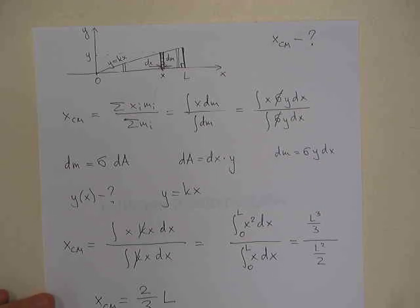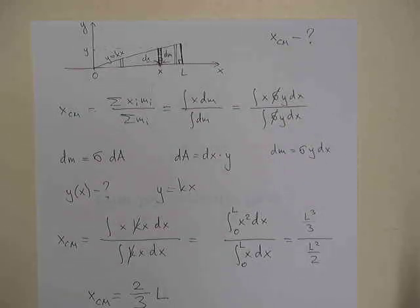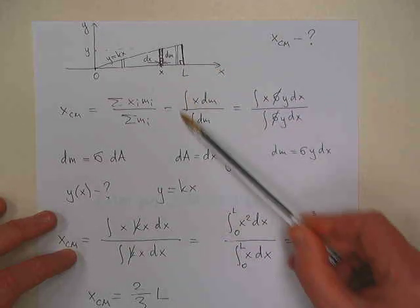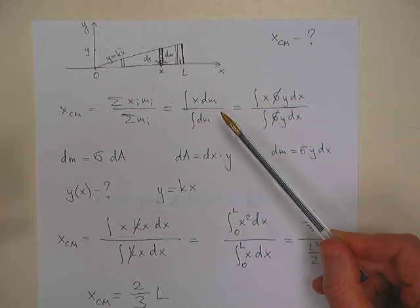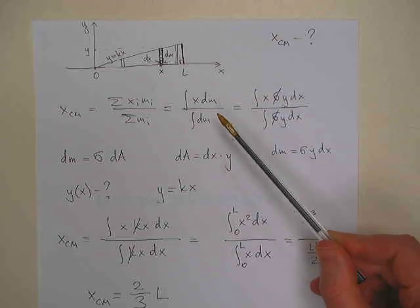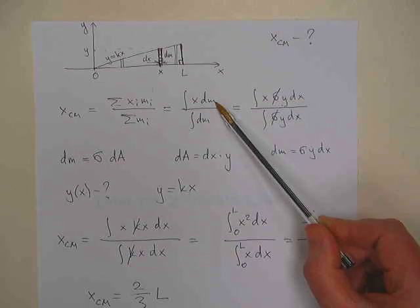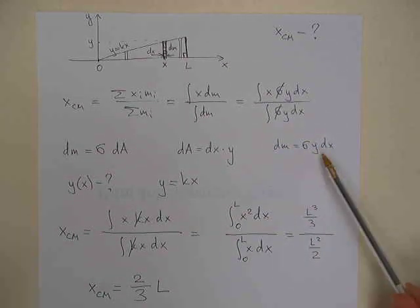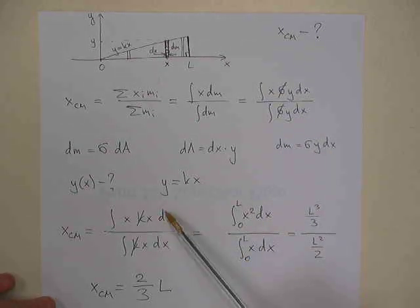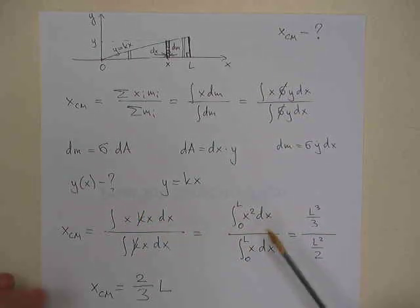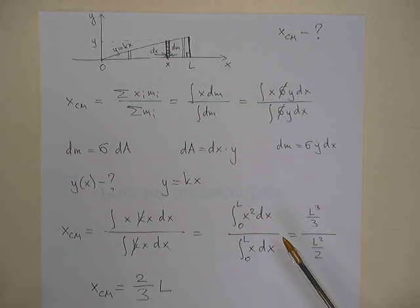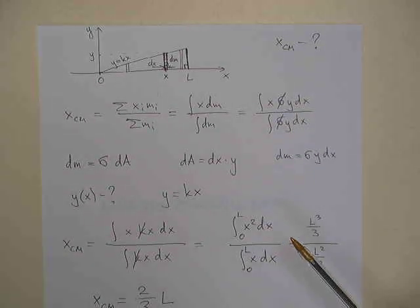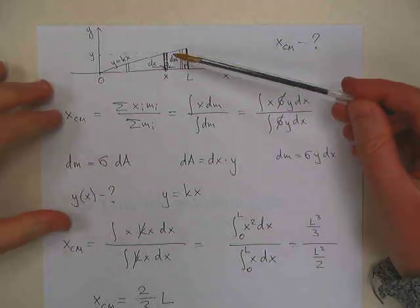This concludes the problem. The main idea behind all integration problems in Physics 140 is the same: we arrive at an integral that is essentially just a definition, and the tricky part is evaluating it. To do that, we must express dm in terms of dx. Once we do, we can always evaluate the integral of some function of x dx — the physics and geometry are captured in that step.